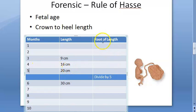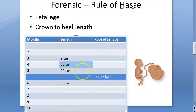For example: 25 centimeters — the square root of 25 is 5, so it is a five-month fetus. If it is 16 centimeters, the square root of 16 is 4, so it is a four-month fetus. If it is 35 centimeters, dividing by 5 gives 7, so it is a seven-month fetus. If it is 50 centimeters, dividing by 5 gives 10, so it is a ten-month fetus.